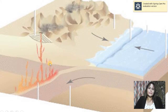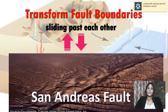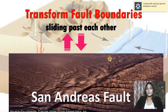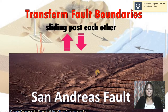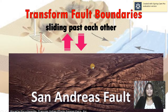The third type is the transform fault boundaries. In this type of plate boundary, the plates move or slide past each other — they tend to grind past each other. An example of this is the San Andreas Fault. If you've seen the Dwayne Johnson movie San Andreas, you have a little background about this type of plate boundary.